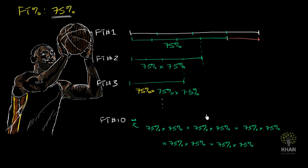So another way of writing that right over there, we could write that as 75% to the 10th power. Repeatedly multiplying 75% 10 times. These are the same expression.